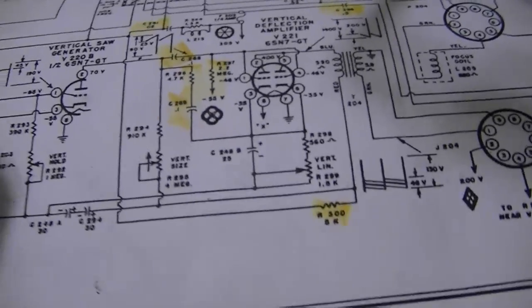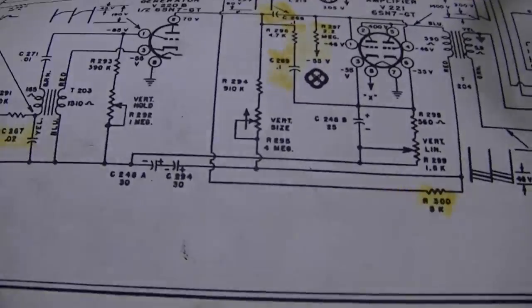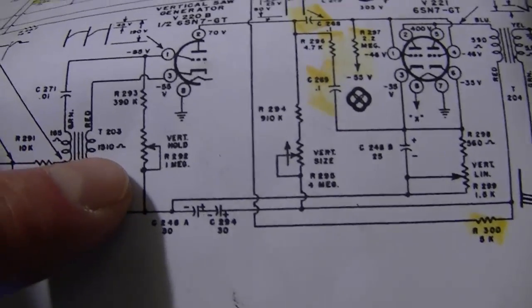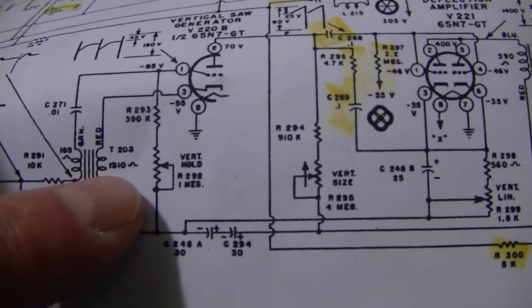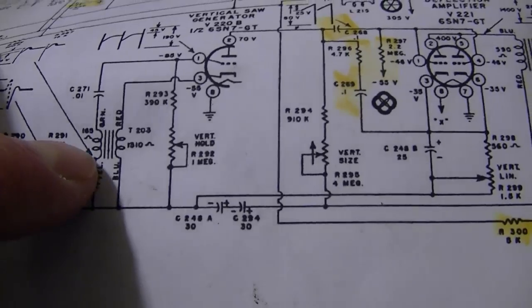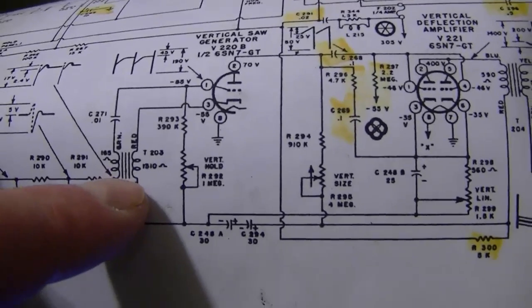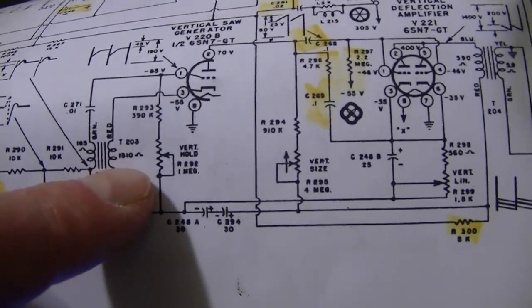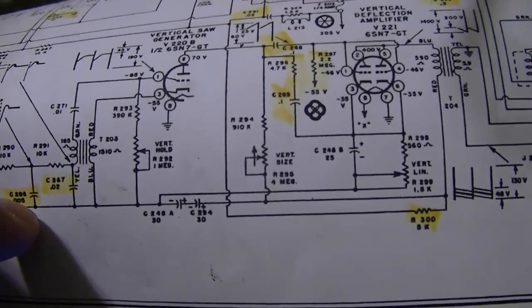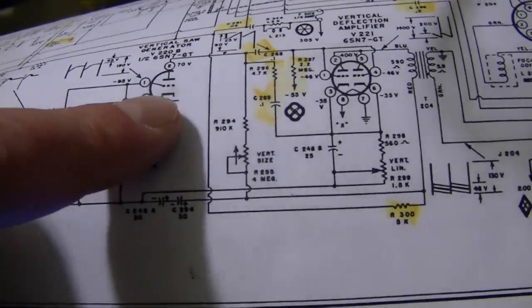I hooked up my scope to the vertical oscillator and I got nothing. I just pinned one right here, so I'm going to start checking the voltages. Right now I've got my meter on this bus here which should be minus 55, and that's about what I got. And I checked this blocking oscillator transformer and I got weird readings. On this side where it should be 1310 I got about 168, and on the other side I got about 900 ohms.